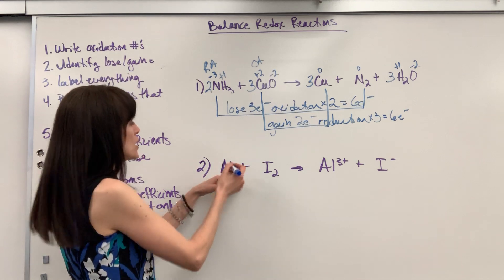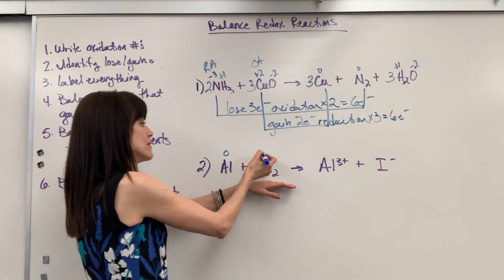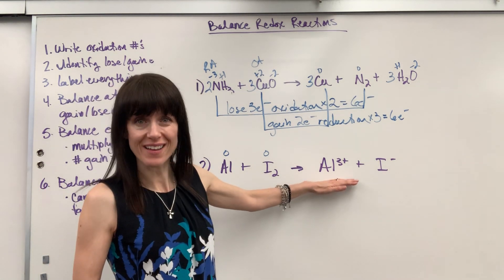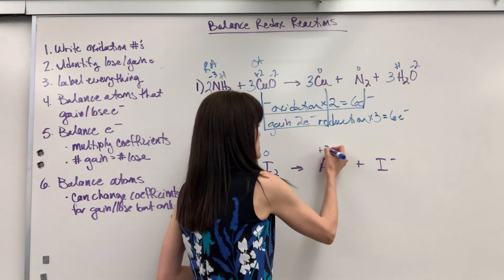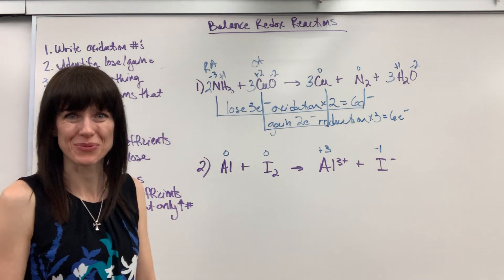Okay, we're just going to follow the same steps. Start with oxidation numbers. Aluminum by itself elemental form is a zero. Iodine by itself elemental form is a zero. Monoatomic ions: whatever the charge is is the oxidation number. So plus three. And then the iodide is a minus one. So that oxidation number is a minus one.